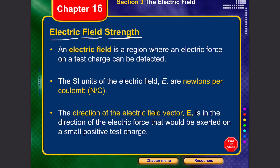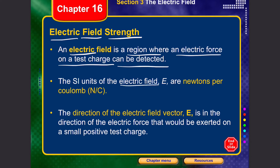The name itself says it — we talked about electric force, and we said that electric force is a field force. That field force comes from a certain field, and that field is the electric field. The electric field is the region where an electric force on a test charge can be detected. Similar to how a magnet exerts more force as an iron piece gets closer, the electric field is the region where you can test whether there is an electrical force or not.